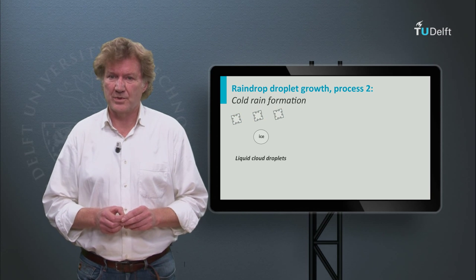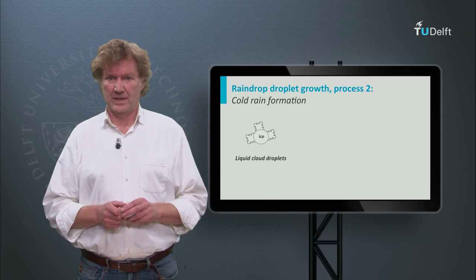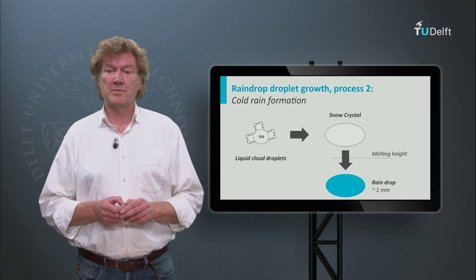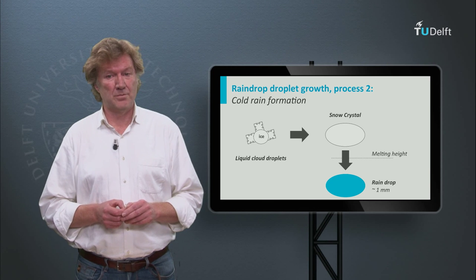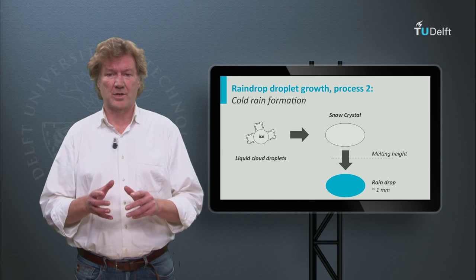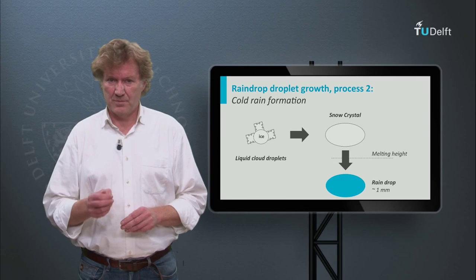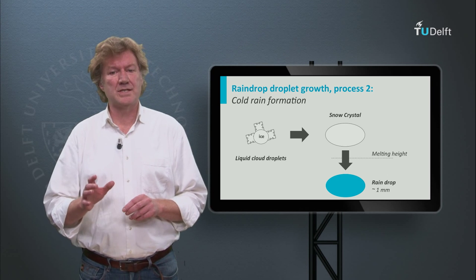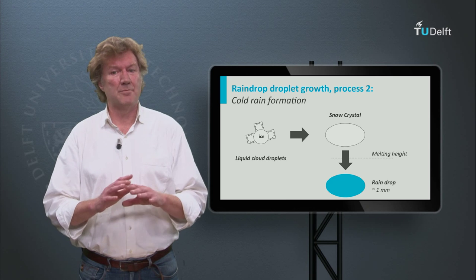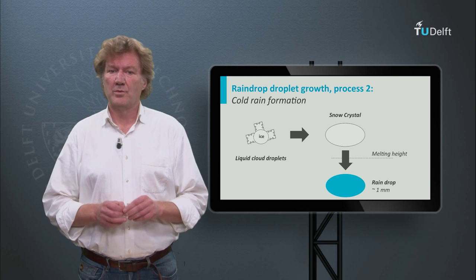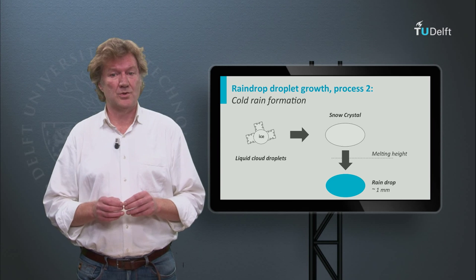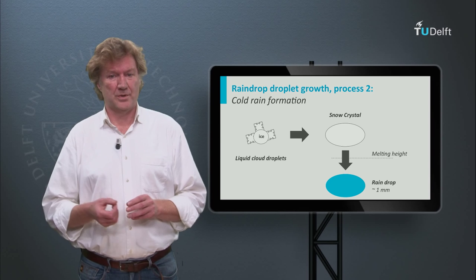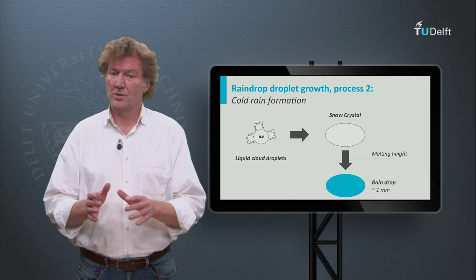The Bergeron-Findeisen process is very common in the atmosphere. In so-called mixed-phase clouds, ice and liquid coexist. The ice particles grow at the expense of the liquid droplets, and large snow crystals can be formed. When these particles are large enough, they fall down. On the way to the surface, they pass the height where it is 0 degrees and melt into raindrops. Because ice is involved in this process, it is also called cold rain, as opposed to the rain from the collision process, which is also known as warm rain.